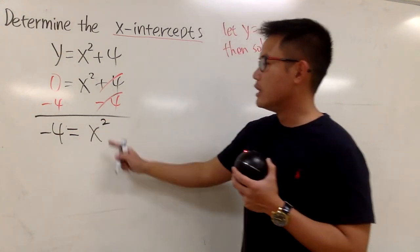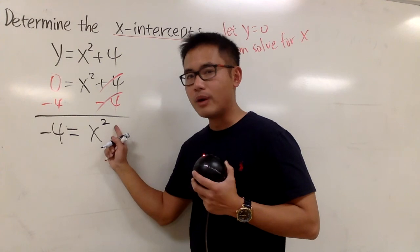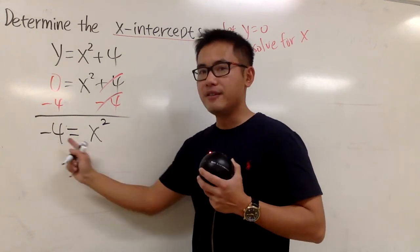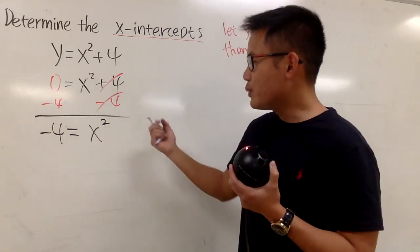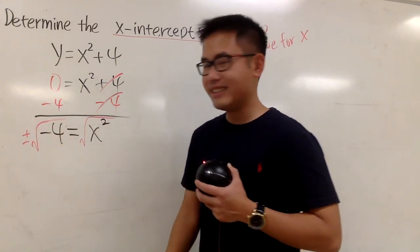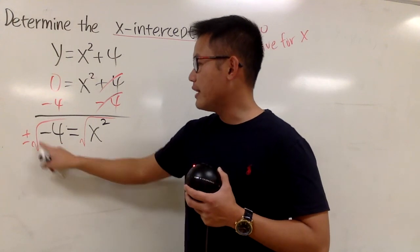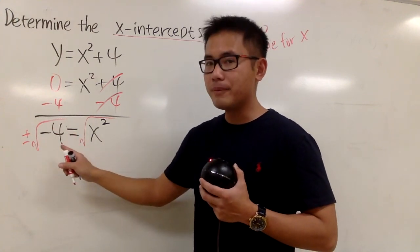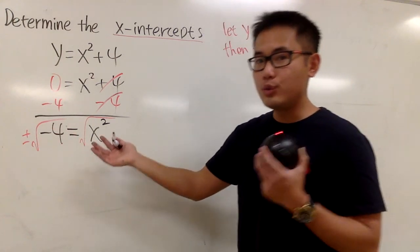The trouble is, when we have x to the second power, we cannot get -4. If you take the square root of both sides and put a plus-minus, when you take the square root of a negative number, we don't have any real value for that.